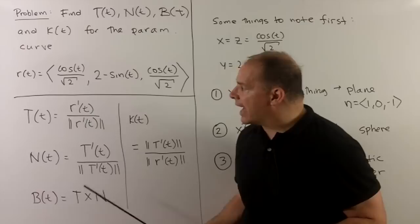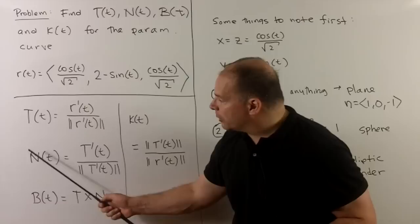Now recall the Frenet-Serret frame. That's going to be built out of the unit tangent, so r'(t) over the length of r'(t), and the principal unit normal, so T'(t) over the length of T'(t).